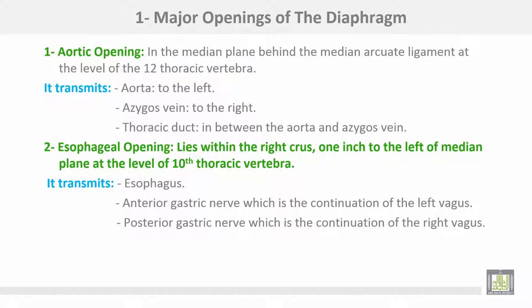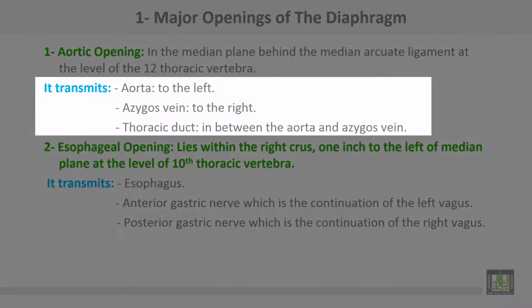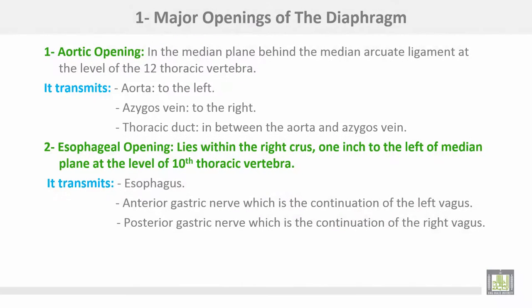The major openings of the diaphragm: number one, the aortic opening, in the median plane behind the median arcuate ligament at the level of the 12th thoracic vertebra. It transmits the aorta, the azygos vein on the right side, and the thoracic duct in between the aorta and the azygos vein.